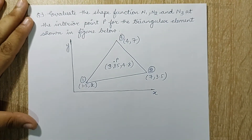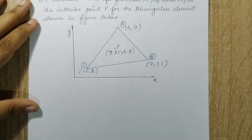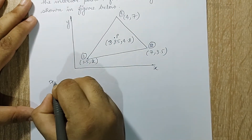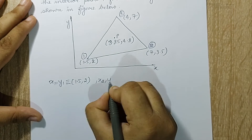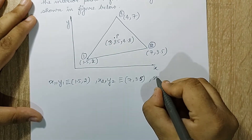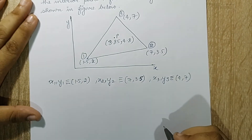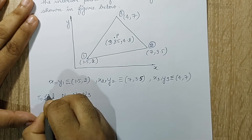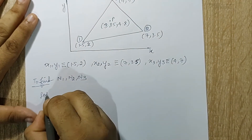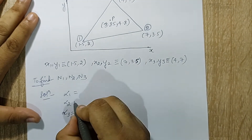Next I will take up numerical 3: evaluate the shape functions n1, n2, n3 at the interior point P for the triangular element shown below. This question is very similar and simple. x1, y1 is 1.5, 2; x2, y2 is 7, 3.5; and x3, y3 is 4, 7. I need to find n1, n2, n3. I am going to calculate alpha 1, alpha 2, alpha 3 — you know the formula so I am not writing it again.